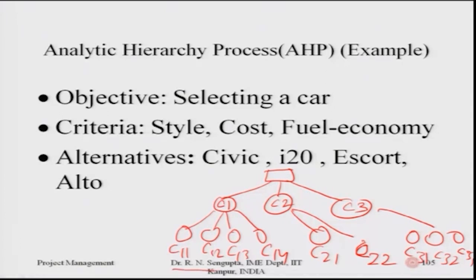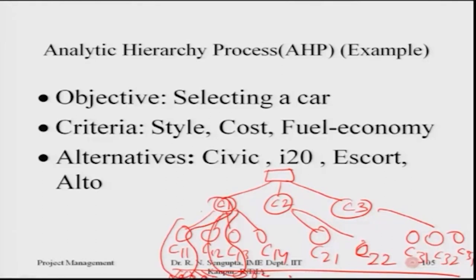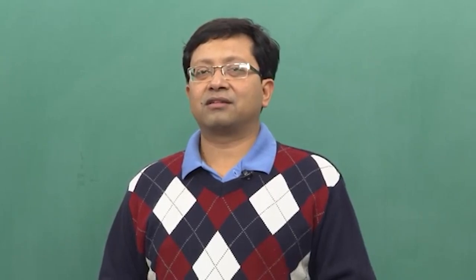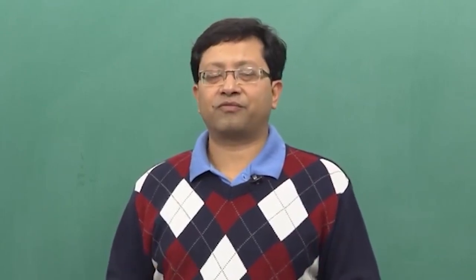At the end level of the hierarchy, all the alternatives appear: A1 (Civic), A2 (I-20), A3 (Escort), A4 (Alto), and other cars as applicable. This conglomeration of alternatives appears under the ending of each group. The goal is to collectively combine each stream one at a time to find the overall cost and the best decision for buying the car. With this, I end the tenth lecture and will continue with the AHP example so students understand how AHP can be utilized in any decision-making or project framework problem. Thank you.